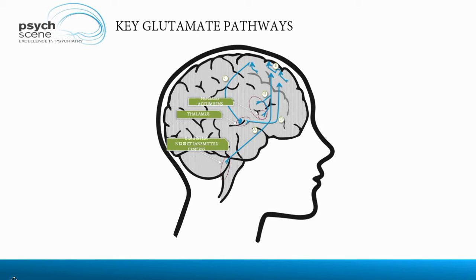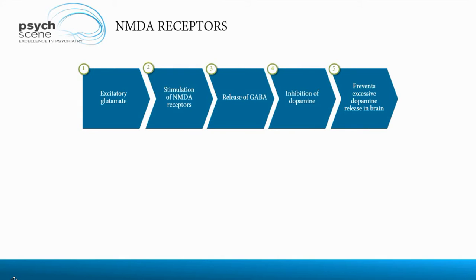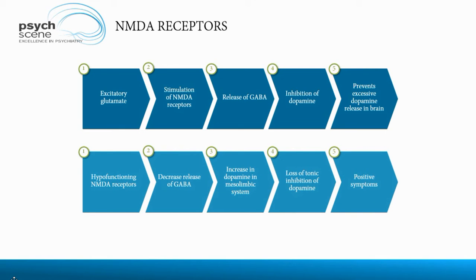The other hypothesis is the glutamate pathway hypothesis. The key point is that when glutamate is activated, it is an excitatory neurotransmitter that stimulates NMDA receptors, which release GABA, and GABA inhibits dopamine — preventing excessive dopamine release in the brain. However, in schizophrenia there is the hypo-functioning NMDA receptor hypothesis: when these NMDA receptors hypo-function, it decreases GABA release, leading to increased dopamine in the mesolimbic system, resulting in increased positive symptoms.